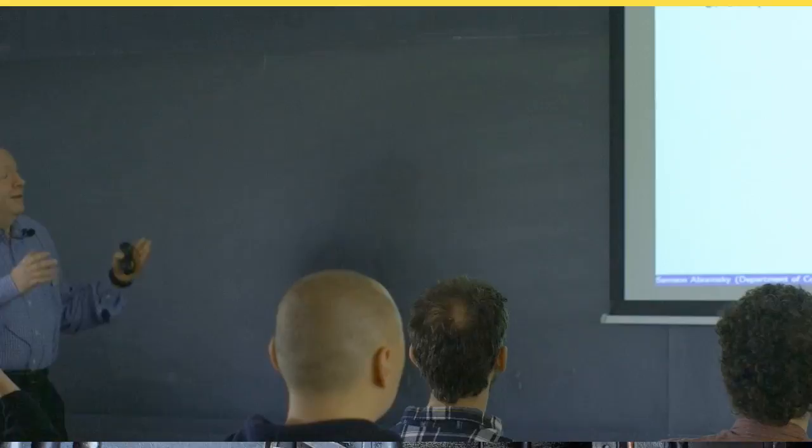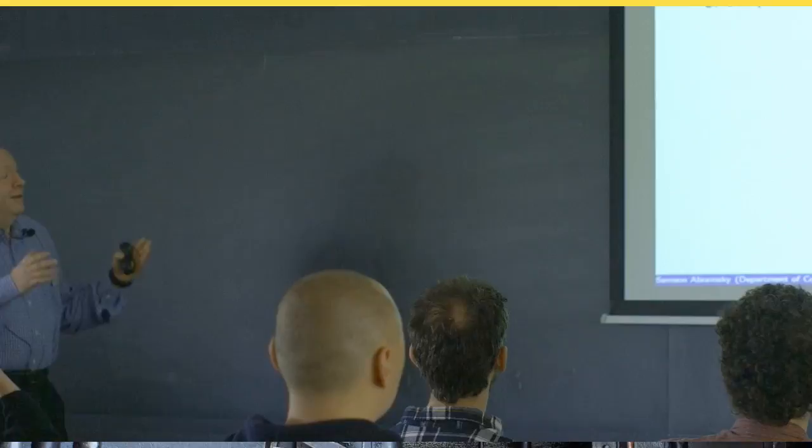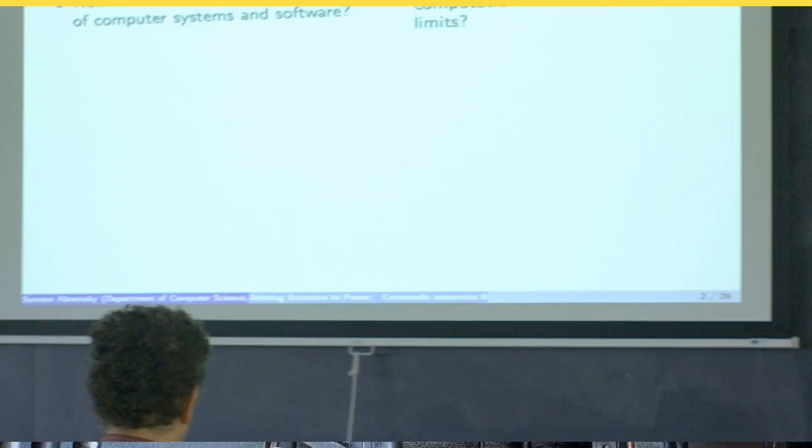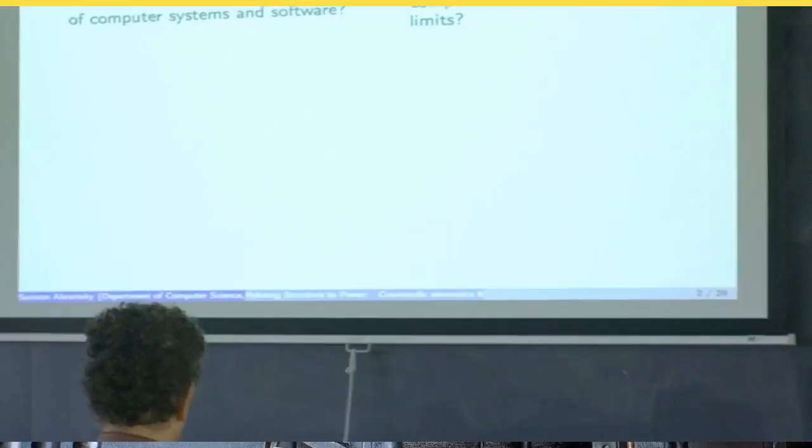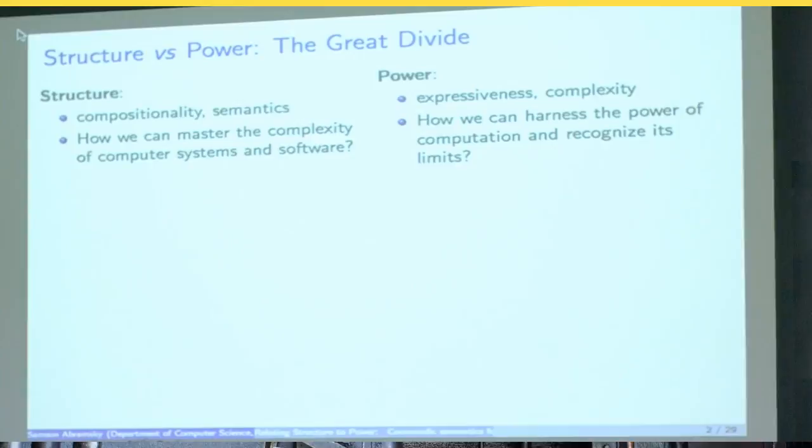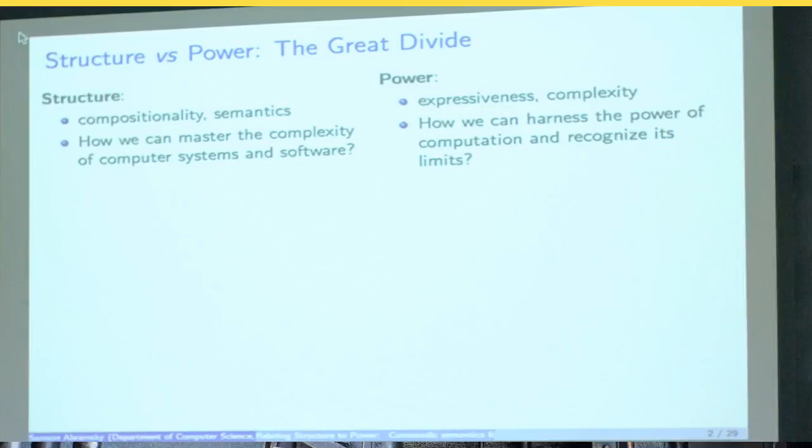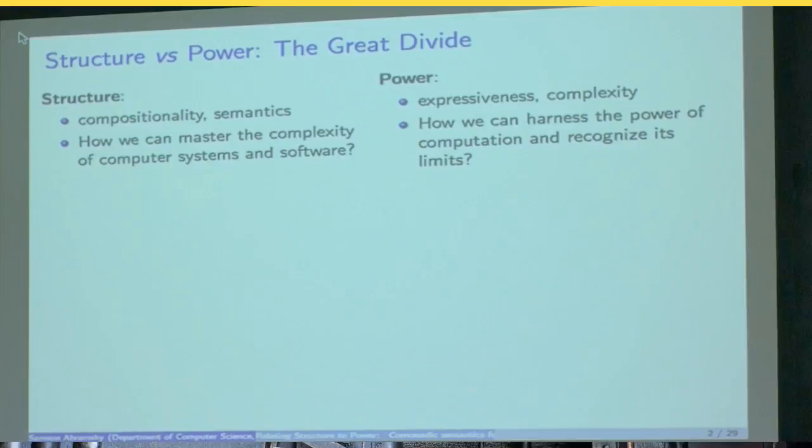What we actually have in computer science is something we've got used to, but nevertheless, maybe we should get a bit less used to it and a bit less accepting of it, because it's a sort of divide or dichotomy. And I'm calling it the structure versus power divide. So on the structure side, we have compositionality, semantics, category theory, and the foundational issue that's being addressed is focusing on the complexity of computer systems and software, and how can we achieve a structural understanding and understand how to put complex systems together.